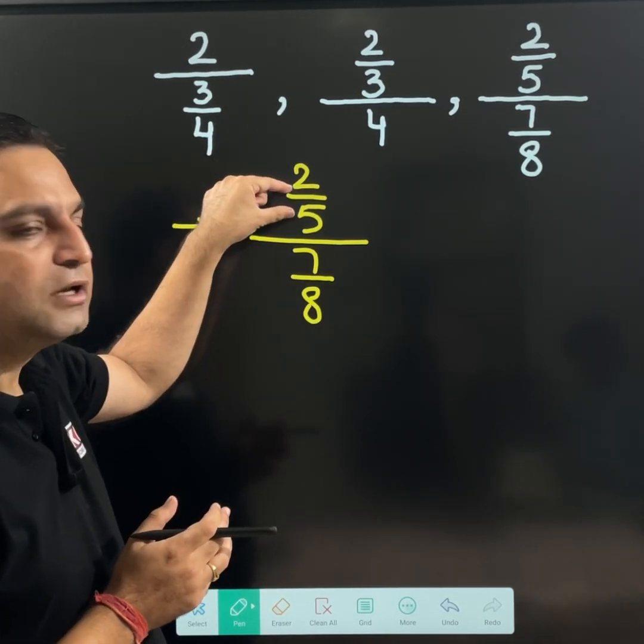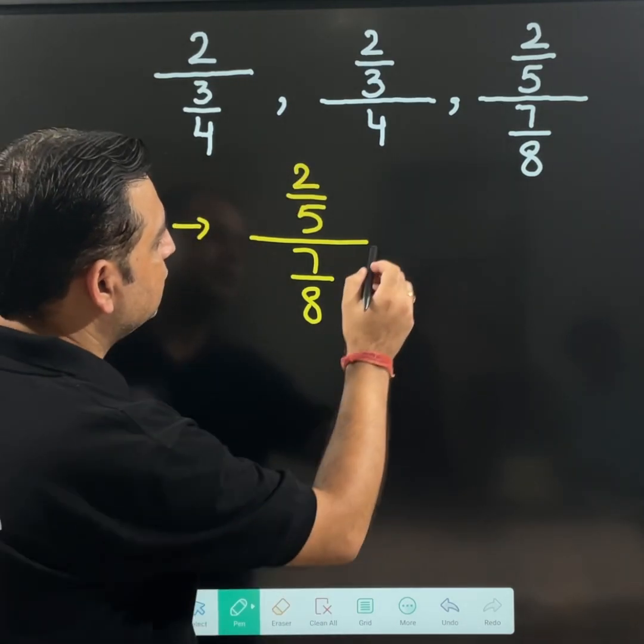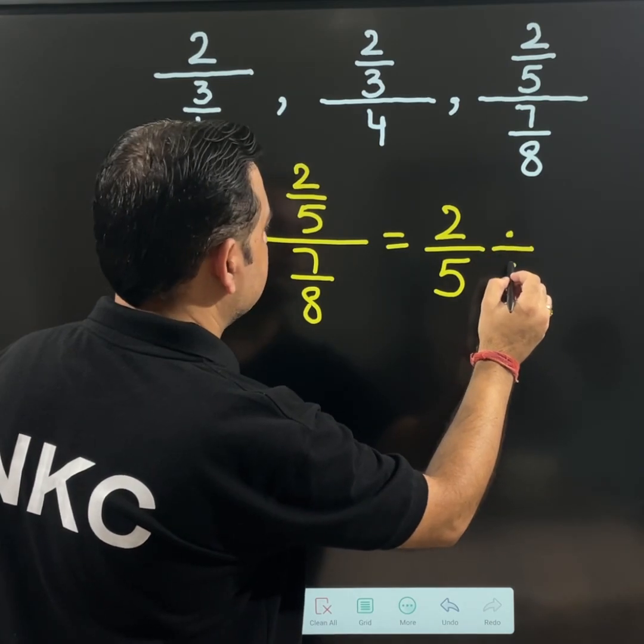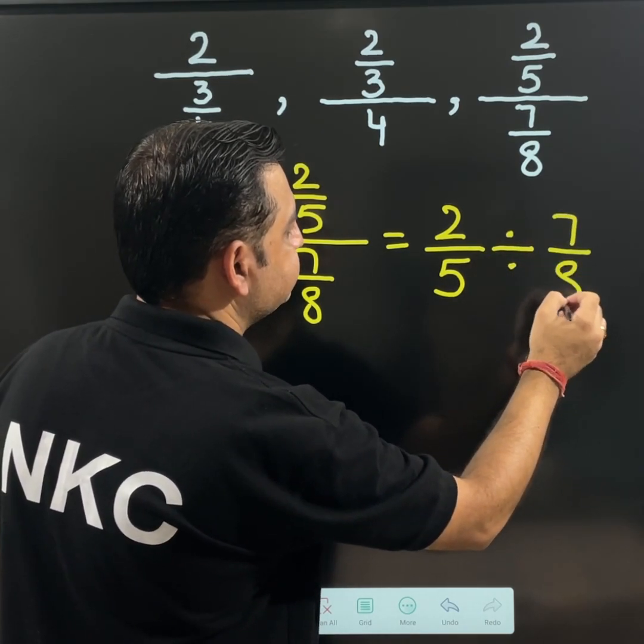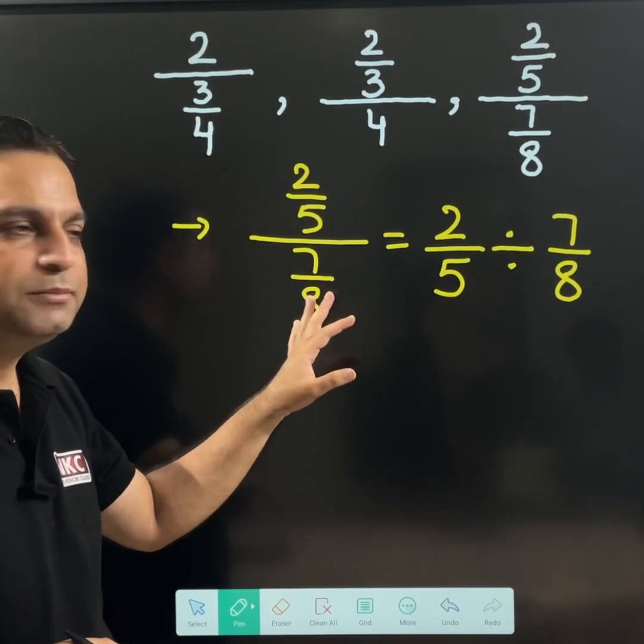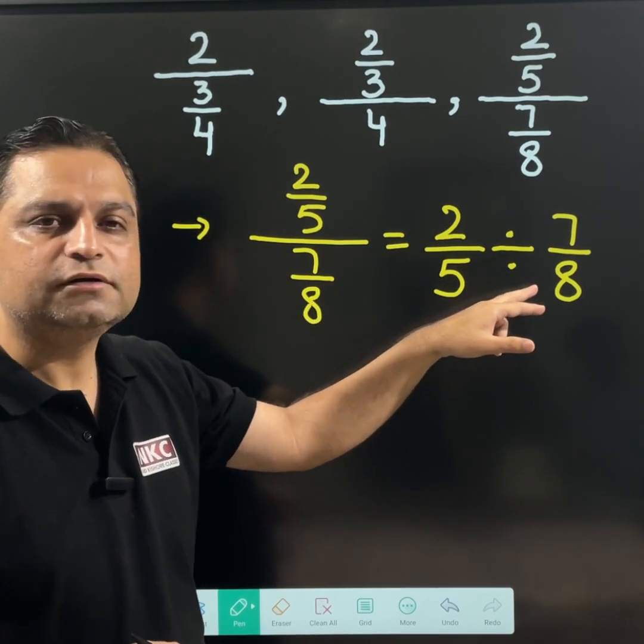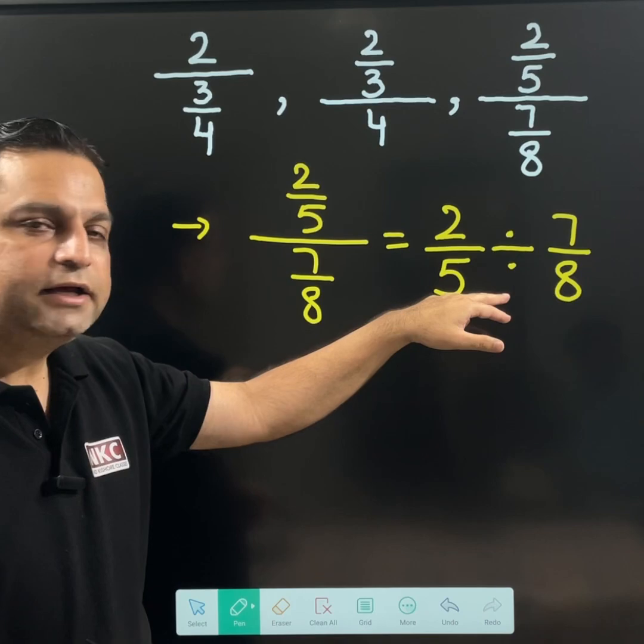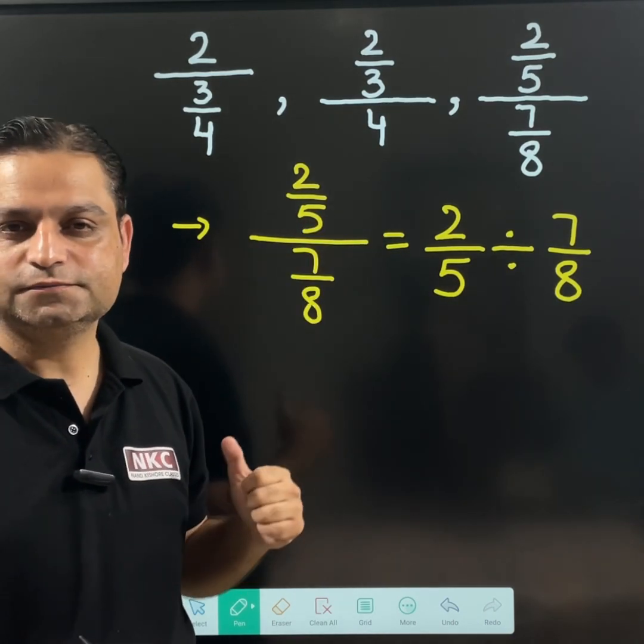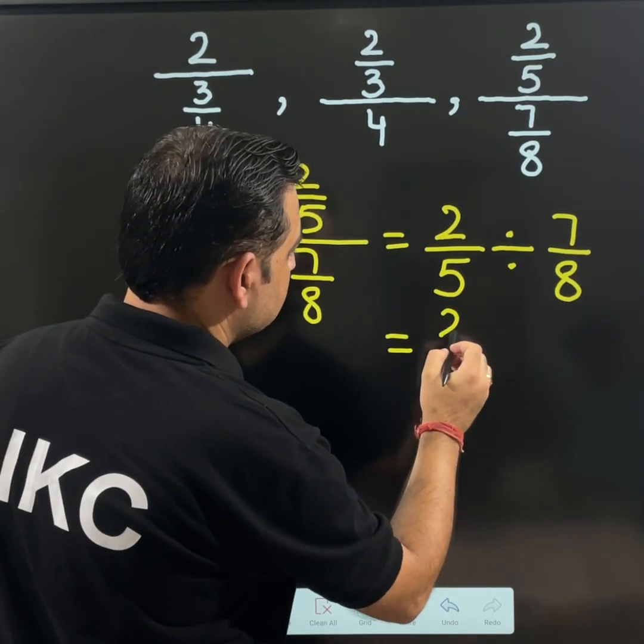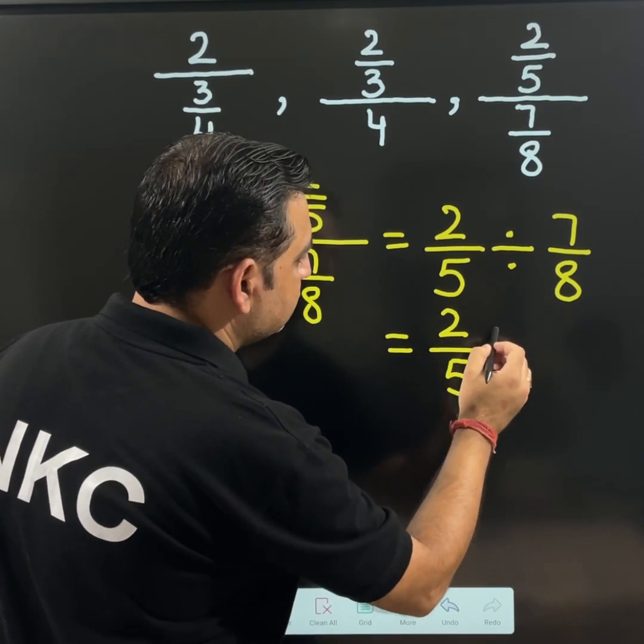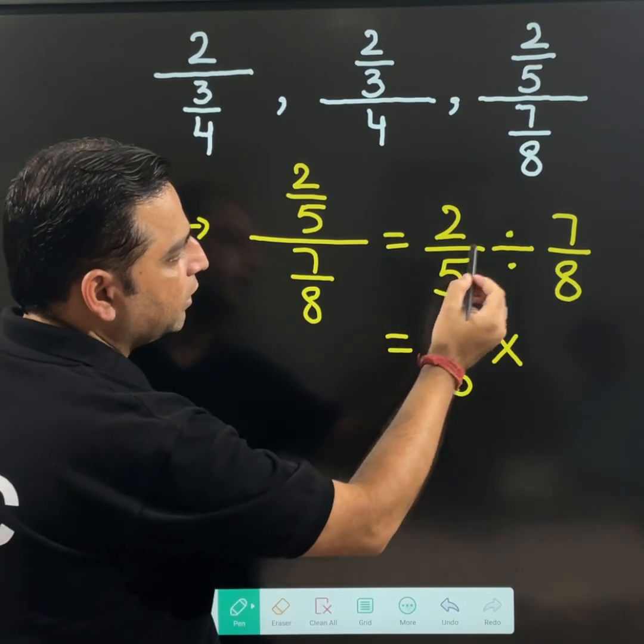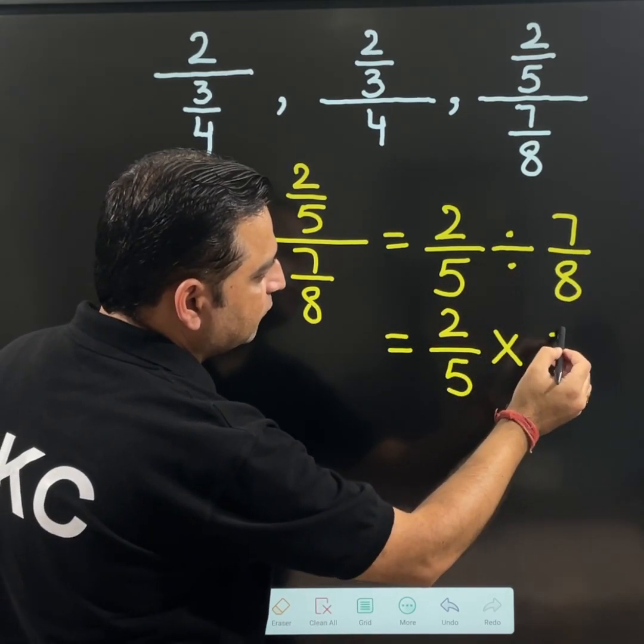Actually what is happening, it actually means 2 over 5 is divided by 7 over 8. This actually means 2 over 5 is being divided by 7 over 8. If you write it like this then question becomes very easy. What will happen? Change the sign of division to multiplication as per our normal routine and just do the reciprocal of 7 over 8.